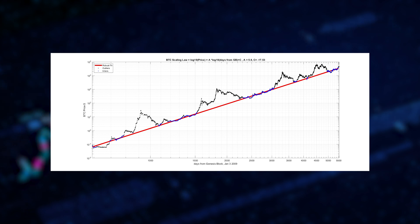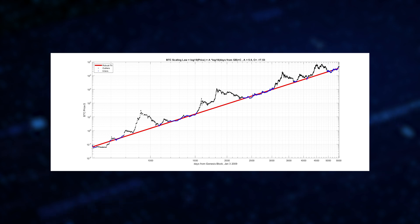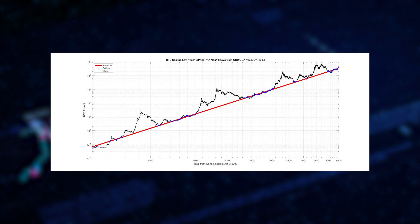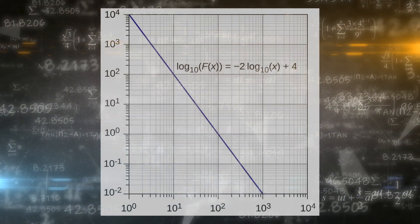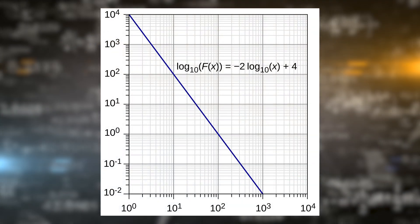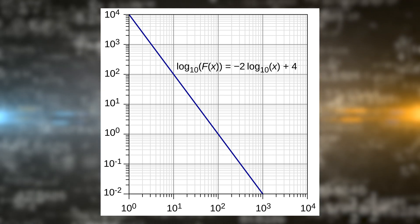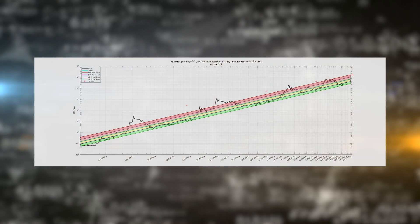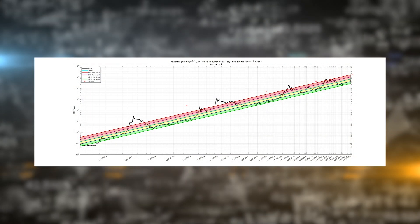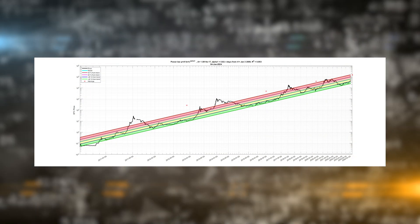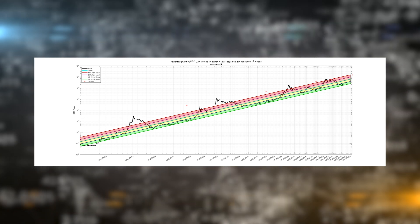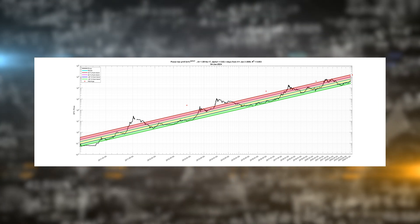Furthermore, we can apply linear regression to draw a line through the data and derive parameters. Now that we can observe the straight line on the log-log chart, we can clearly see the significance and accuracy of the power law. A power law is a functional relationship in which a relative change in one quantity gives rise to a proportional relative change in the other quantity, independent of the initial size of those quantities. In Bitcoin's case, the two quantities are price and time. Power laws have been observed in various complex naturally occurring phenomena, indicating that the growth of Bitcoin's price behaves in a very organic manner.